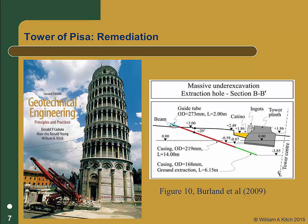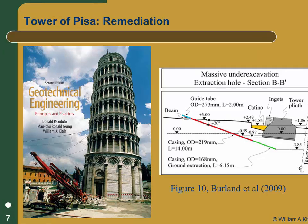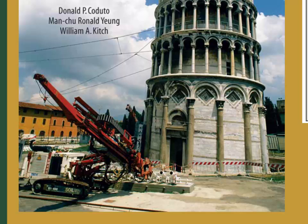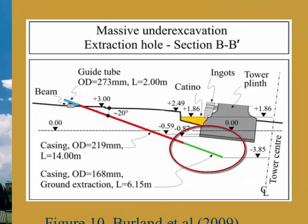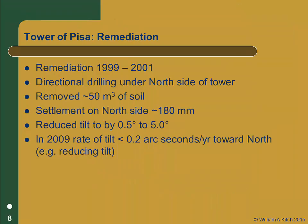After careful studies during the 1990s, the method chosen was to carefully remove soil from under the foundation on the north side of the tower using directional drilling. The photo on the cover of your textbook shows the drill rig used to remove the soil and the angled tubes used to guide the auger. The figure on the right illustrates where the soil was removed from under the foundation. The remediation took place from 1999 through 2001. Approximately 50 cubic meters of soil was removed from under the foundation on the north side. This generated about 180 millimeters of settlement on that side and reduced the tilt of the tower by about half a degree. The tower owners did not want to straighten it out completely because its tilt is part of its charm. The half-degree reduction is not noticeable by the general public, but it significantly reduces the stresses on the south side of the structure.